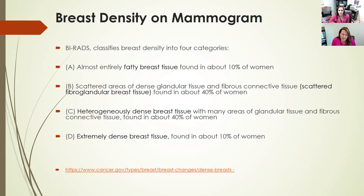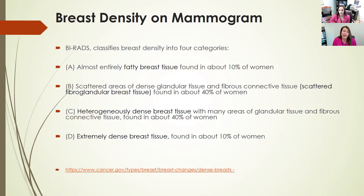When we look at breast density on mammogram, the radiologists rate your breast density each time. The Breast Imaging Reporting and Data System — we call it BIRADS — classifies breast density into four categories. Category A is almost entirely fatty breast tissue; the fat shows up as black on mammogram and we can see right through it, but only about 10% of women have almost entirely fatty breasts. Category B is scattered fibroglandular, found in about 40% of women — fatty tissue with scattered glands throughout — and it still gives us a really good picture on mammogram.